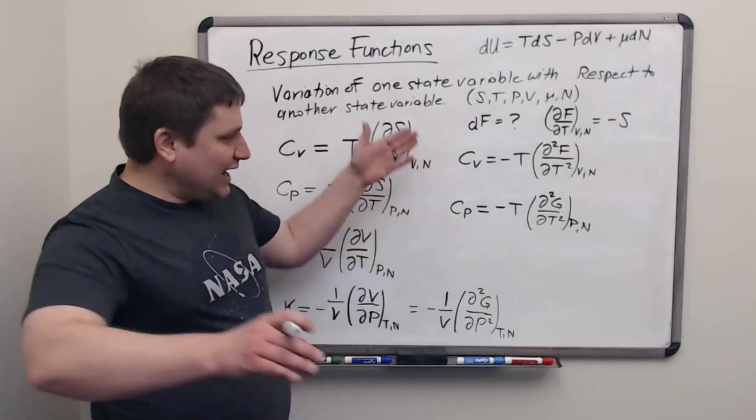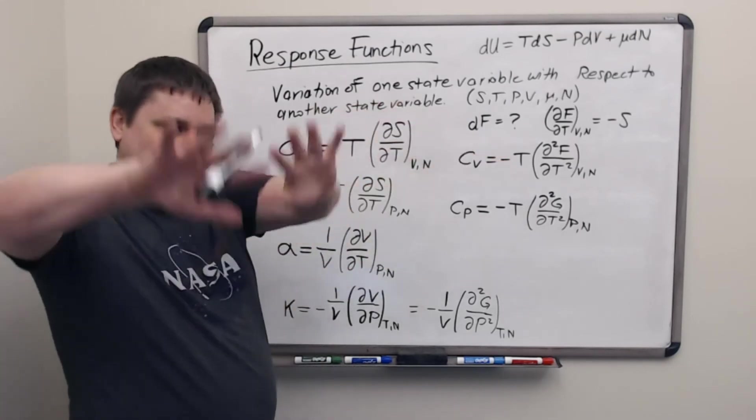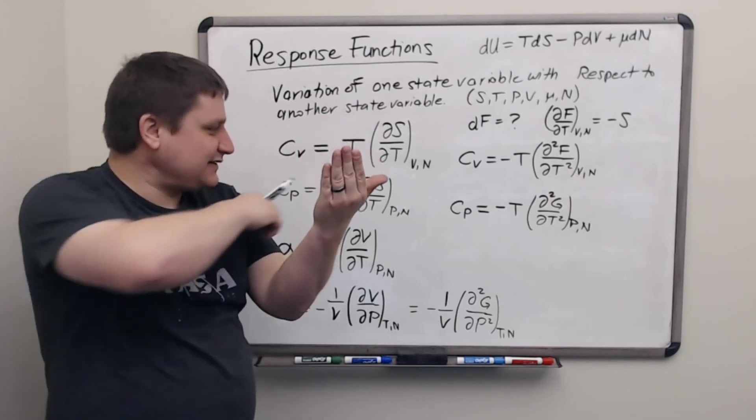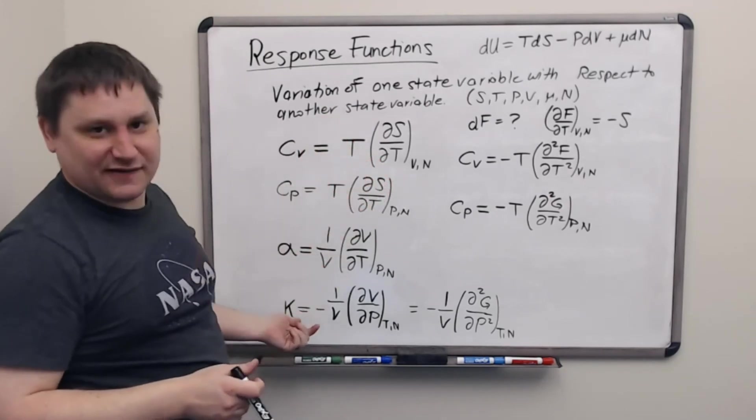Gibbs free energy. You plot it versus temperature and pressure. It makes some two-dimensional surface plot. The curvature on one axis is Cp. The curvature along the other axis is the compressibility.